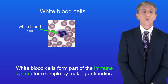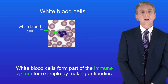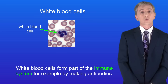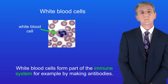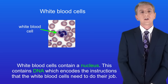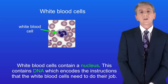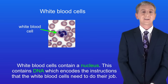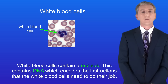White blood cells form part of the immune system, for example making antibodies — we're going to take a closer look at that in a later video. The key feature of white blood cells is that they contain a nucleus. This contains DNA which encodes the instructions that the white blood cells need to do their job.